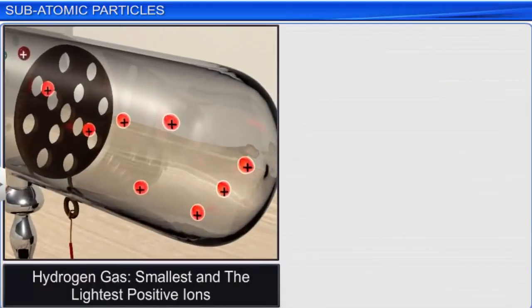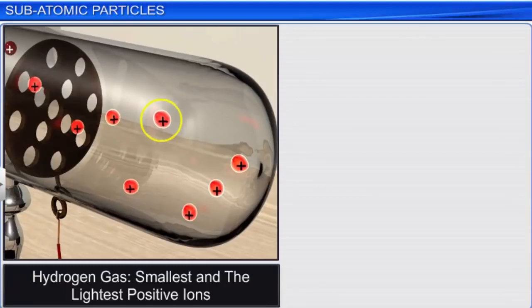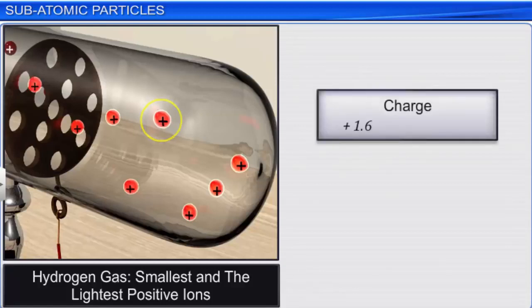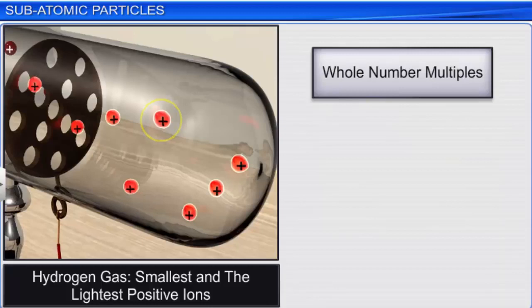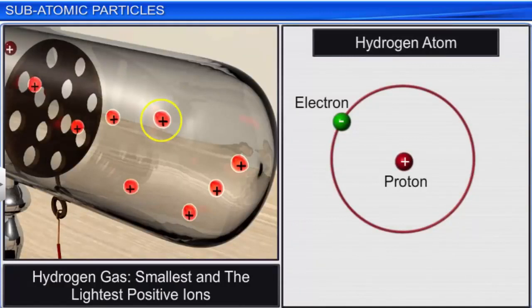Hydrogen gas produced the smallest and lightest positive ions with a magnitude of charge same as that of an electron but with a positive charge — +1.6 × 10⁻¹⁹ coulombs — and a mass similar to that of a hydrogen atom, 1.67 × 10⁻²⁴ grams. The mass of positive particles from other gases was found to be whole number multiples of those from hydrogen. Therefore, positive particles from hydrogen gas, carrying one positive charge and mass equivalent to a hydrogen atom, were taken as the fundamental particles of any atom and named protons.